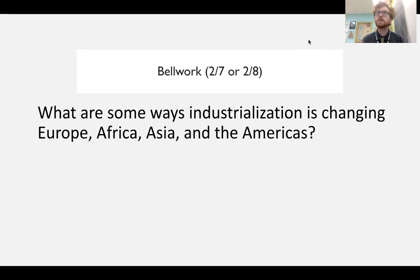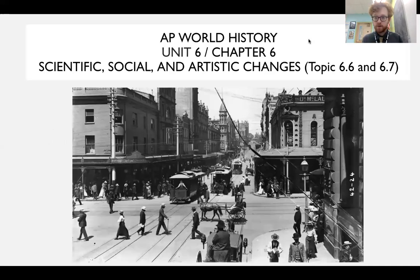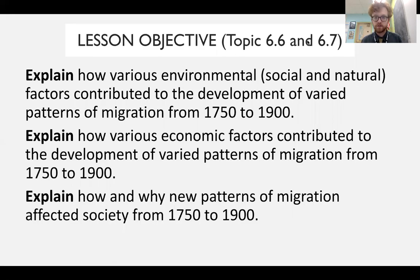Today, we're going to finish up Unit 6. We're going to look at Chapter 6. We'll talk about some social, economic, scientific, and artistic developments by the end of the 19th century, by the end of the 1800s. Your bellwork is on the screen right now. You should have six from this unit: what are some ways industrialization is changing Africa, Europe, Asia, and the Americas? We're going to focus on scientific, social, and artistic changes by the end of the 1800s. We'll look at some developments of modern society leading us into World War I.